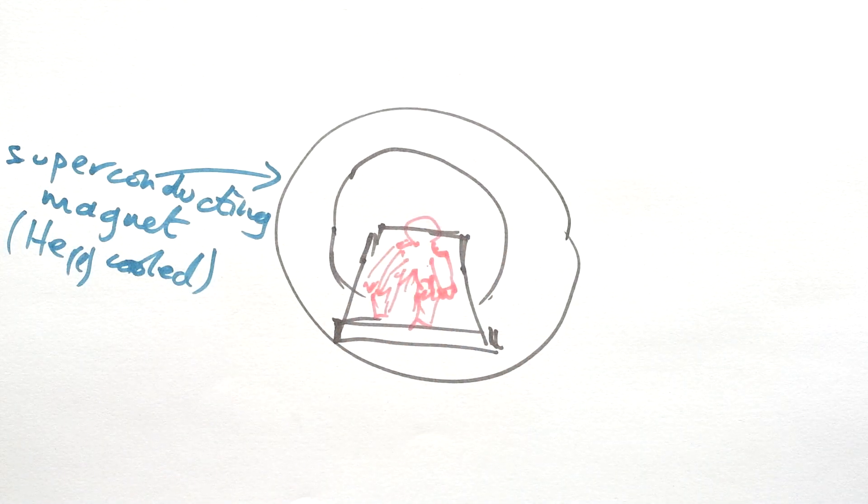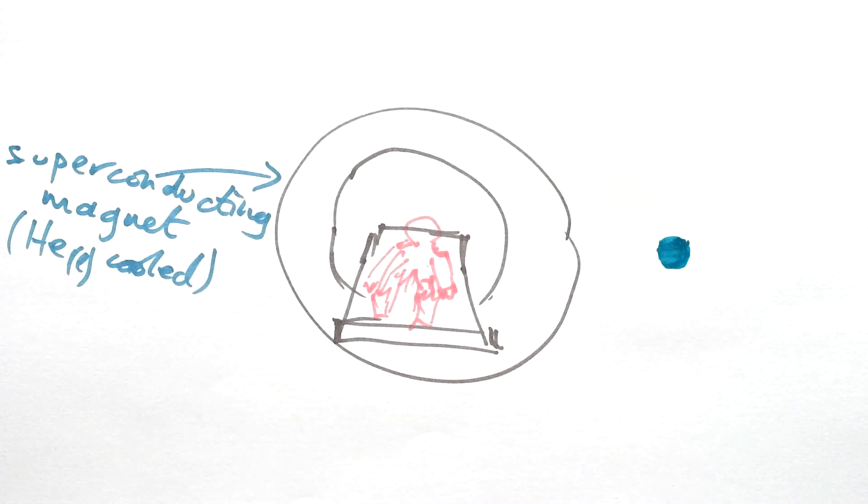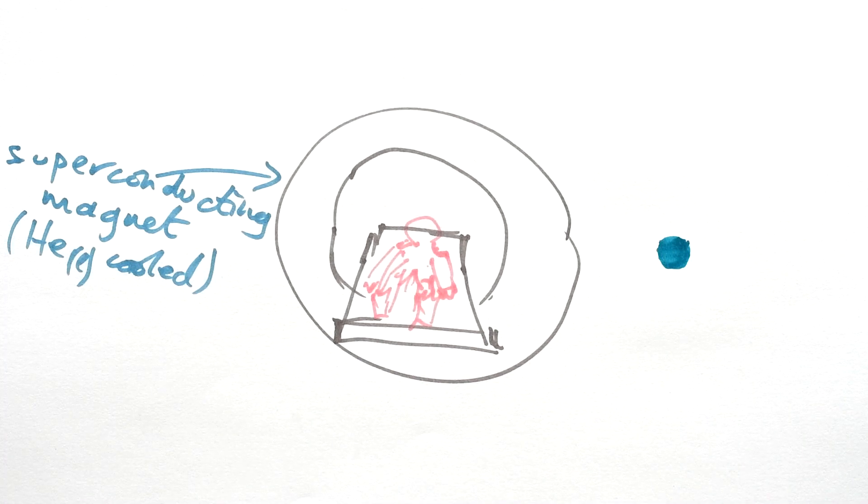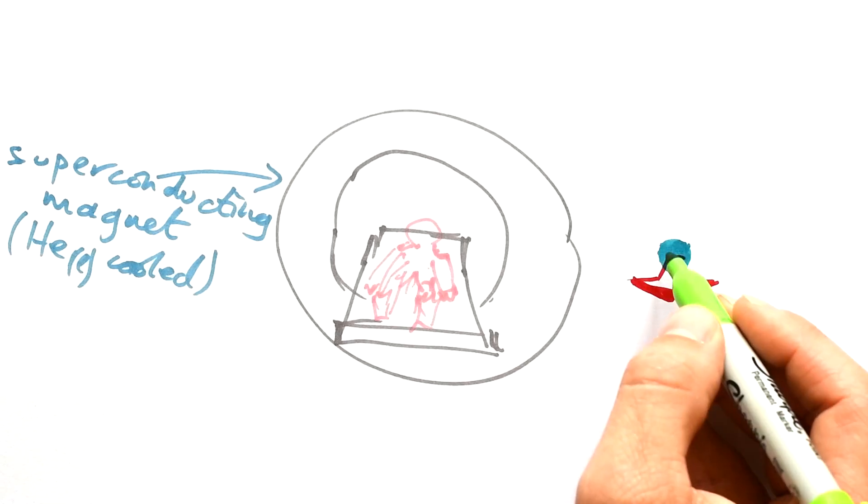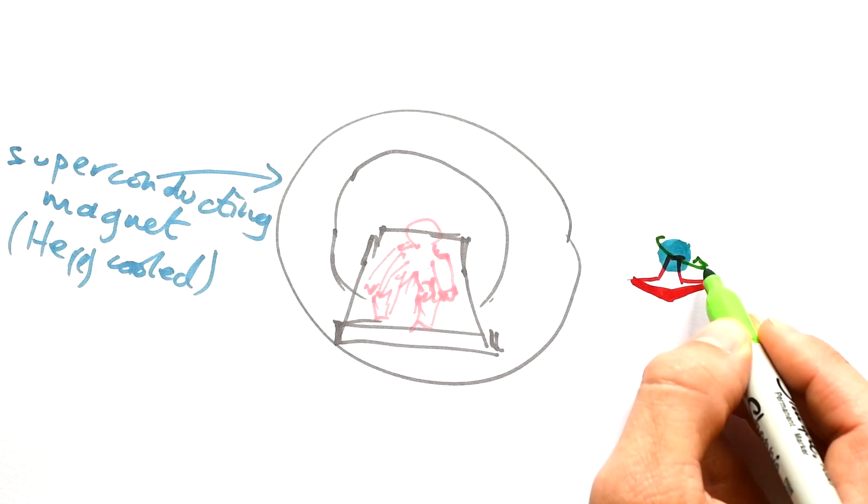What the magnetic field does is affect protons at the center of hydrogen atoms in the person's body. Now, even without a magnetic field, these protons are spinning and they're all spinning in all different directions. Now, the magnetic field is coming out of the page towards us, like we said. But let's say that this proton is spinning around like that.